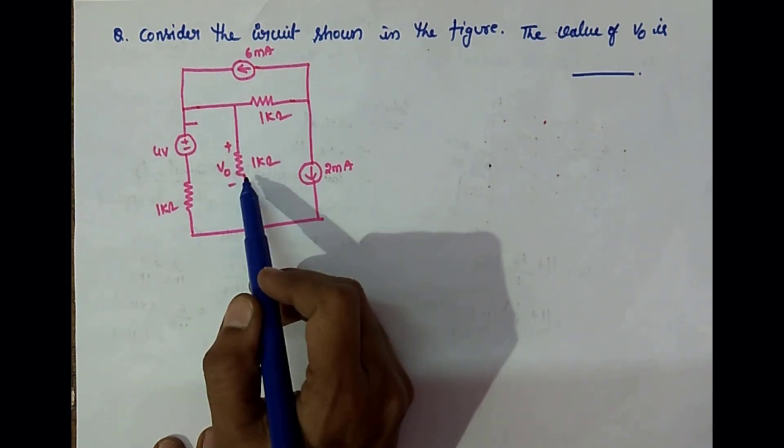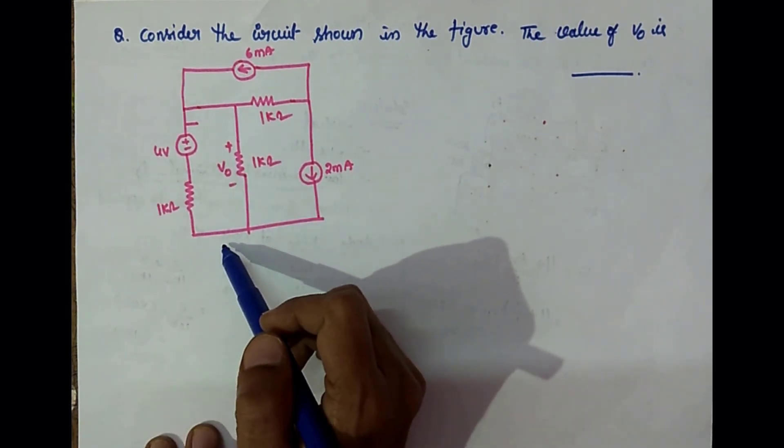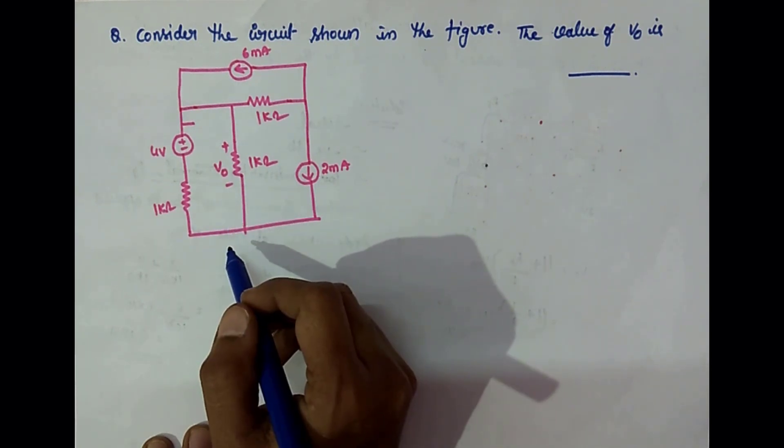What is V0? It is the voltage across the 1 kilohm resistor. This can be done by using nodal analysis.